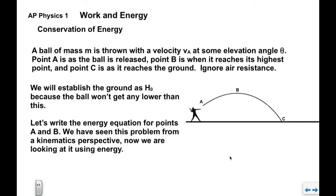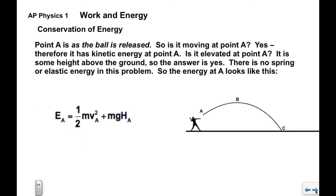So we're going to look at this problem and immediately establish h naught is going to be the lowest point, the ground. The ball won't go any lower than that. And now we'll write the energy equation for points A and B. When we look at point A, it's as it's released. So we ask if it's moving. Yes it is moving, so it has kinetic energy. That means I'll have a one half mv_a squared term.